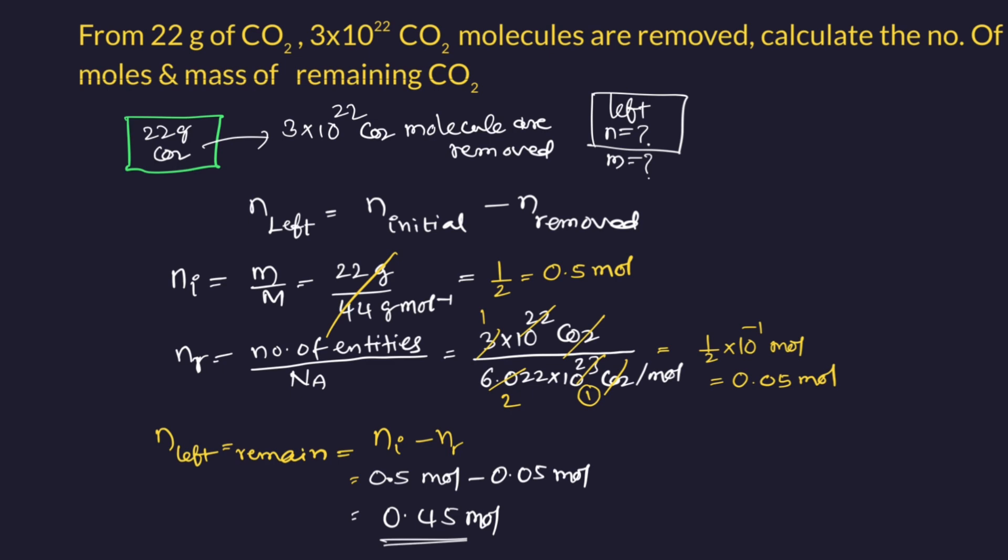Second answer, how to calculate? Mass equals n times molar mass. From this formula, mass equals number of moles left multiplied. Therefore, 0.45 mole times molar mass 44 grams per mole. Mole cancels. Then we will get the answer: 19.8 grams.